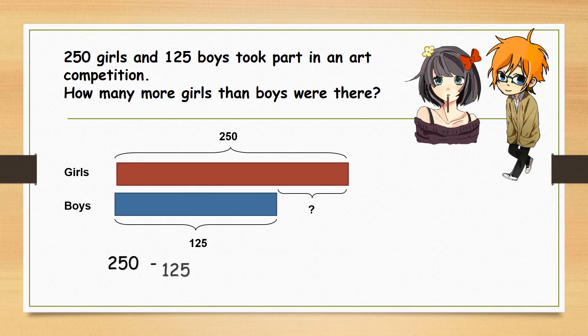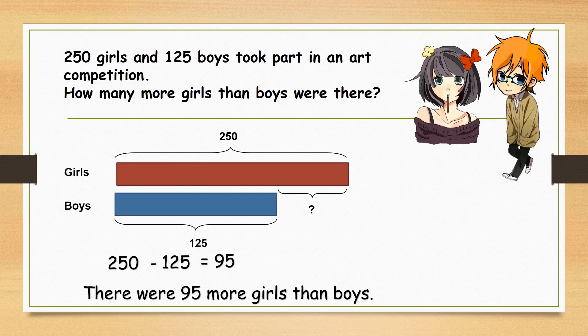250 minus 155 equals 95. So there were 95 more girls than boys.